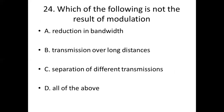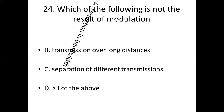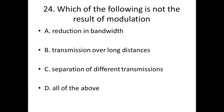24th bit. Which of the following is not the result of modulation? Option A, reduction in bandwidth. Option B, transmission over long distance. Option C, separation of different transmissions. Option D, all of the above. Answer: Option A, reduction in bandwidth.